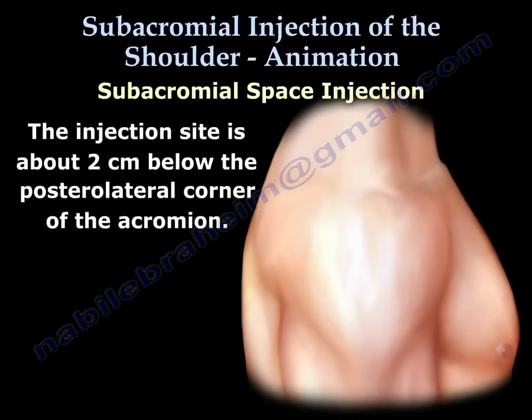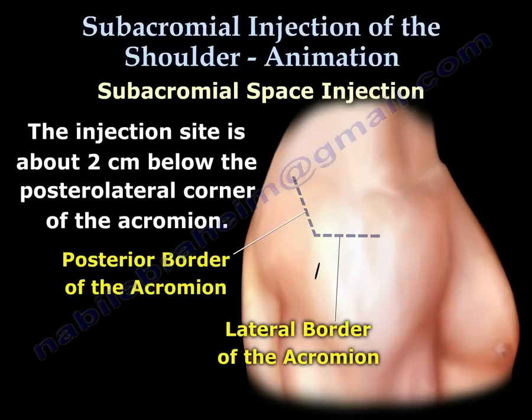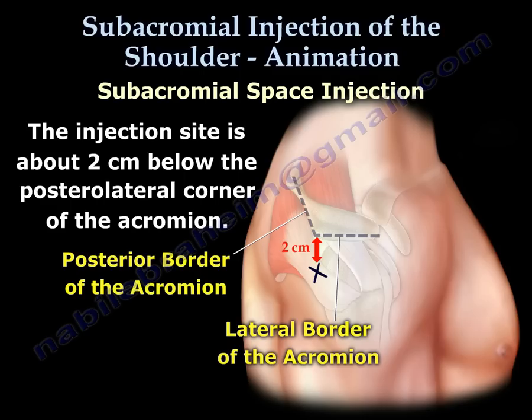The site of injection is about 2 cm below the posterolateral corner of the acromion. We identify the posterior border of the acromion and the lateral border of the acromion, and we go about 2 cm below that posterolateral corner of the acromion. We select that site for injection.